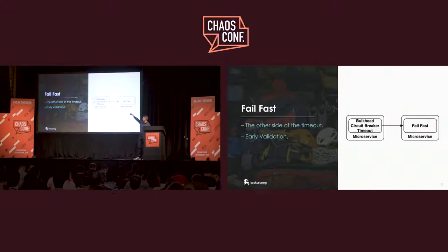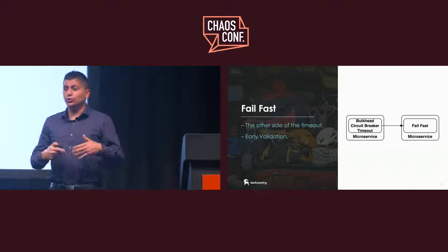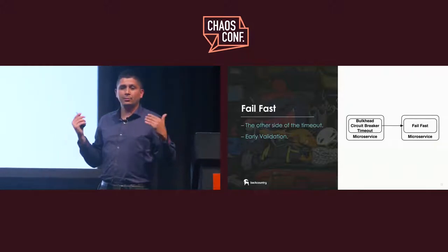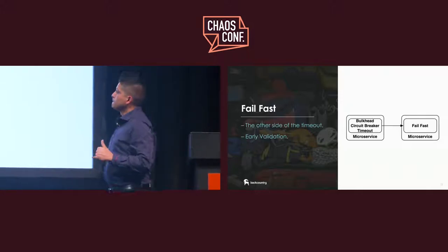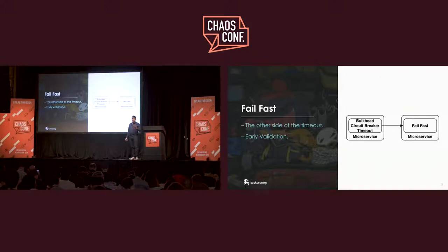Fail fast. If you imagine a resilient client with bulkhead pattern, circuit breaker, timeout, and retry, then the other side of the equation is the server doing fail fast. The only reason you have a timeout is because a resource is taking too long — but what if the dependency just fails fast? You can use your SLAs, define a duration so the server says 'I'm giving up' and lets the client handle the error. Another important aspect of failing fast is early validation: if a request has errors, invalid data, or is malformed, why bother processing it? It adds an additional layer to your APIs, but it's worth it — it's also a security concern.